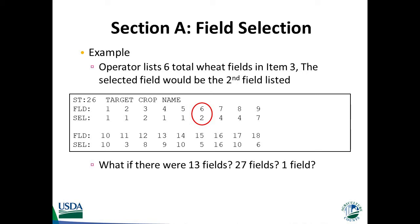If there were 13 fields planted to the target crop, you would circle the pair of numbers including the 13 and the 9, which would make the selected field the 9th field listed on the previous page. If there were more than 18 fields — say 27 fields — we would treat the situation as though there were only 18 fields, and circle the 18 and the 6, making the 6th field the selected field. If there is only one field planted to the target crop, that field automatically becomes the selected field. Once selected, it may be helpful to circle the randomly selected field in the Item 3 listing.